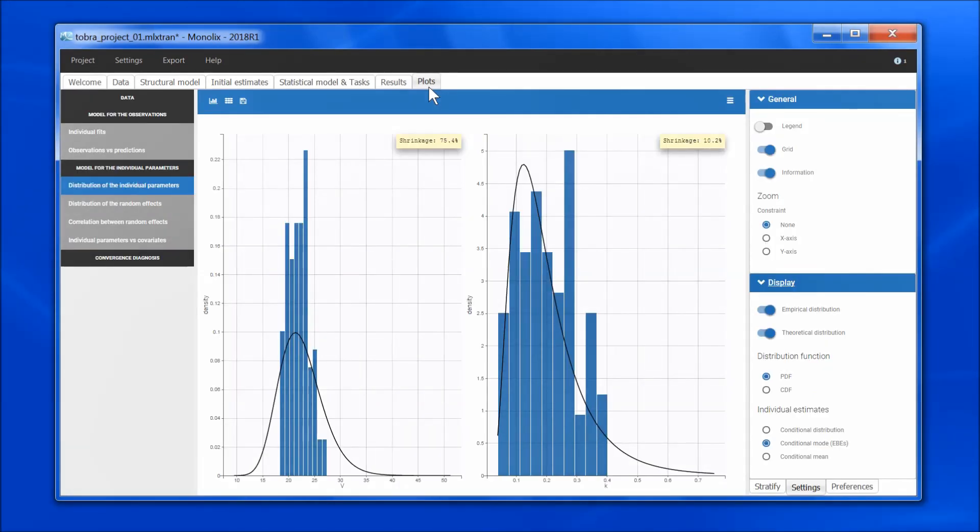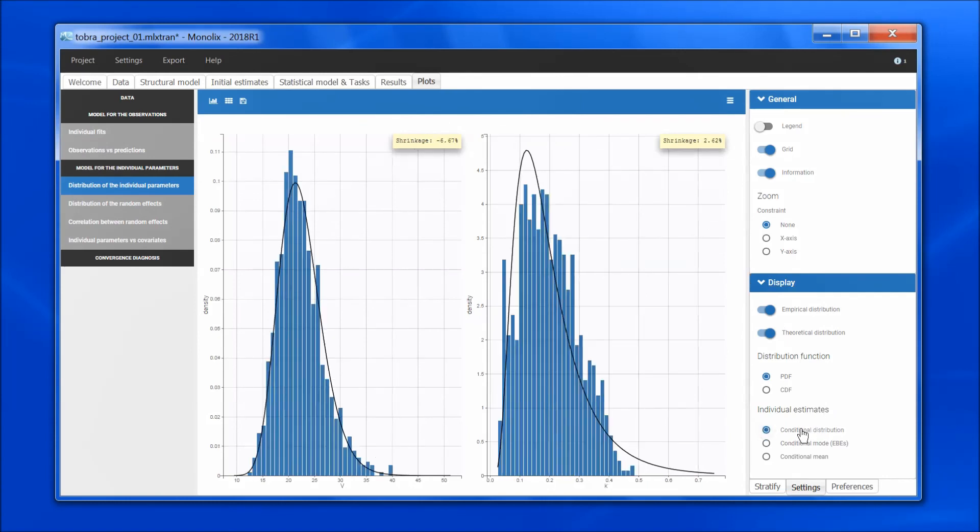Monolix will by default use the samples from the conditional distribution, which is this option here. As you can see, the shrinkage has been greatly reduced, and the diagnostic plots are now reliable.